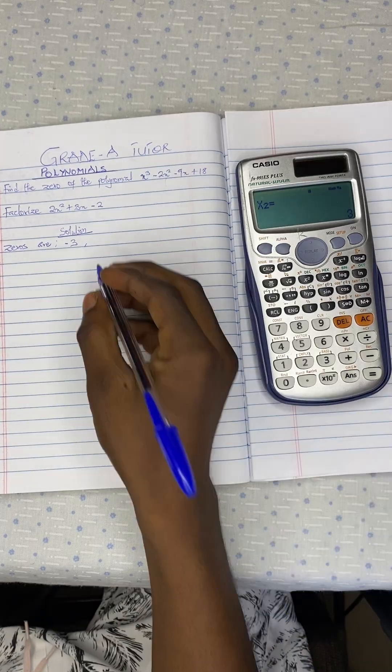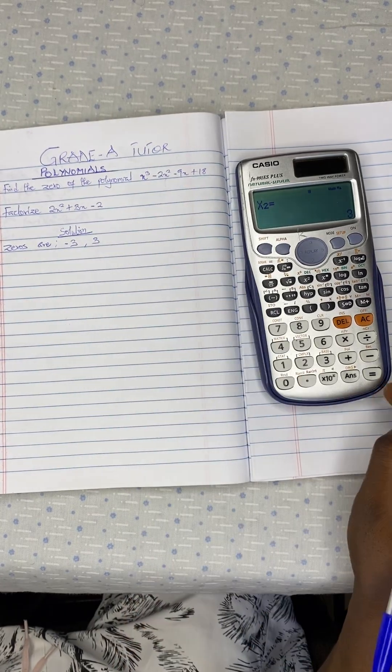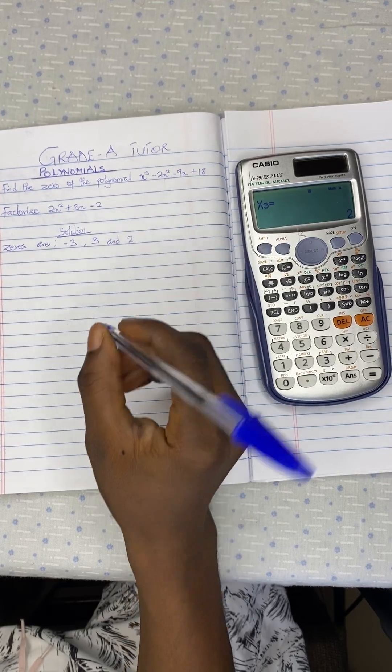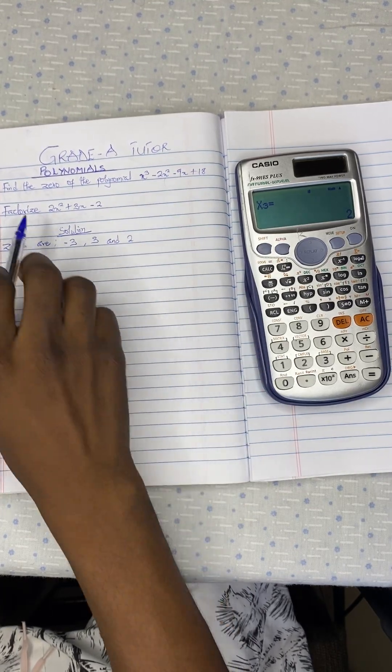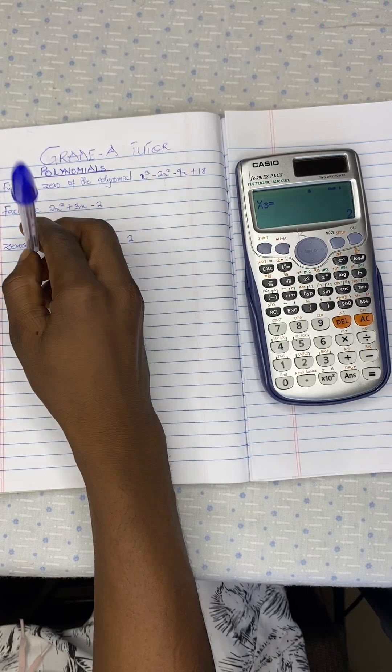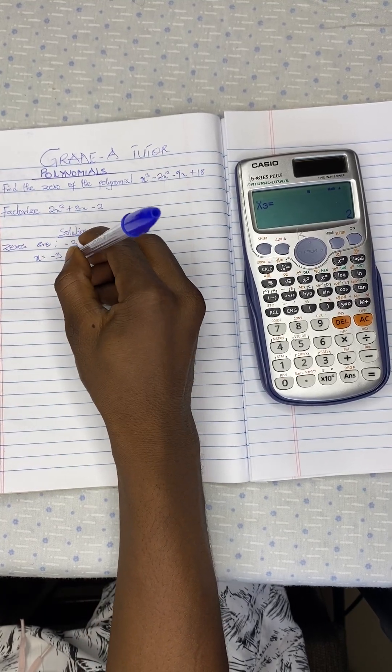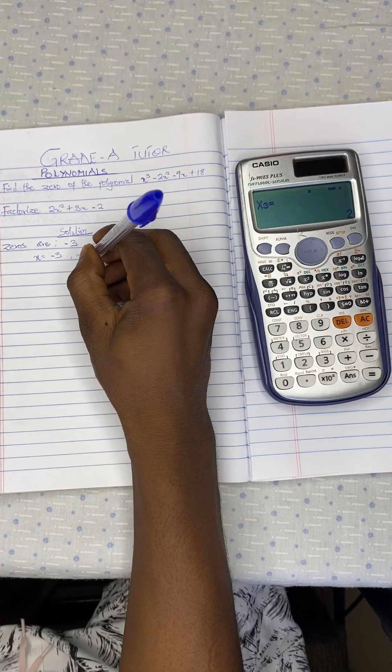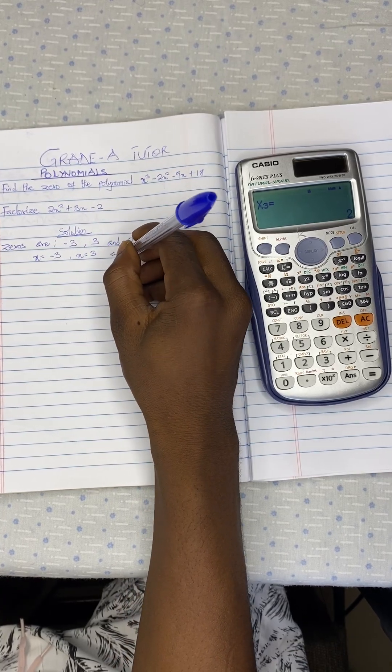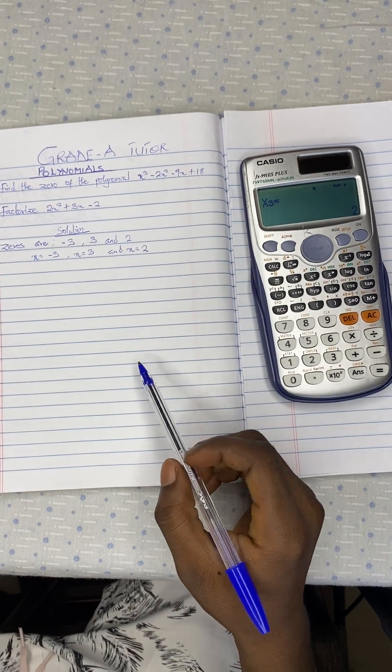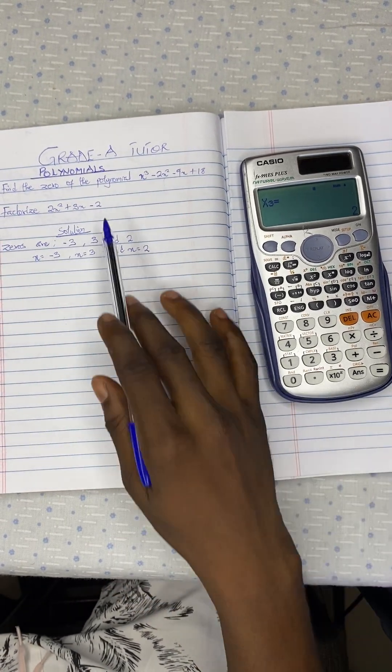We have positive 3 and positive 2. So these are the zeros of this particular polynomial. It's the same as x equal to negative 3, x equal to positive 3, and x equal to positive 2. That is the answer for the first question.